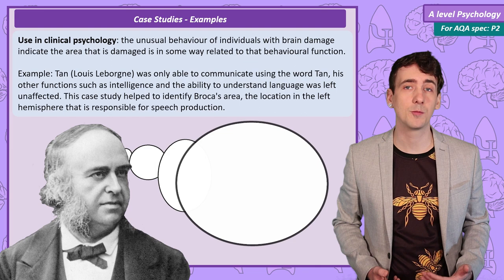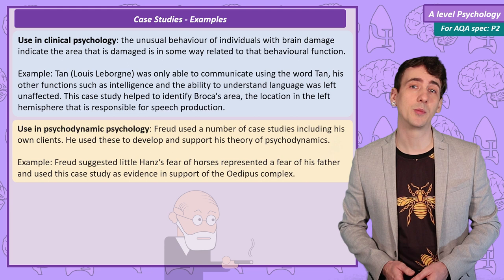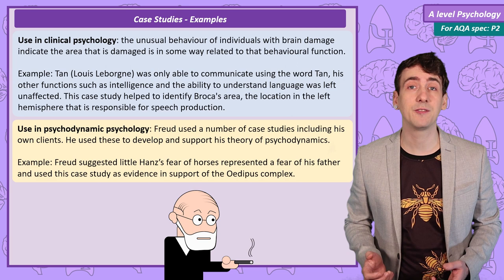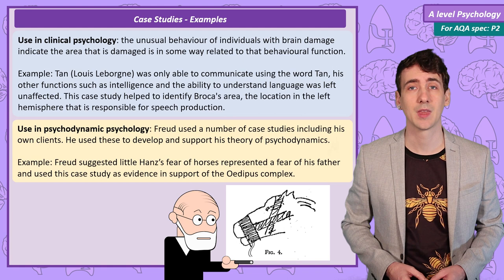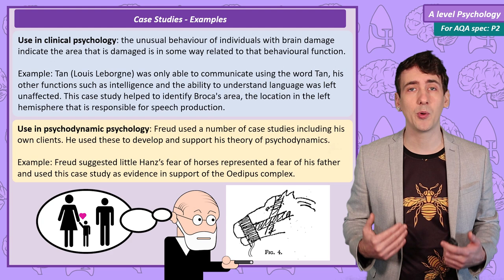Freud used a number of case studies to develop psychodynamics, and the most famous was Little Hans. This young boy had a phobia of horses that Freud identified as being symbolic of his fear of his father. Freud conducted this case study by sending a series of letters to his father, and used it to support his theory of childhood development.